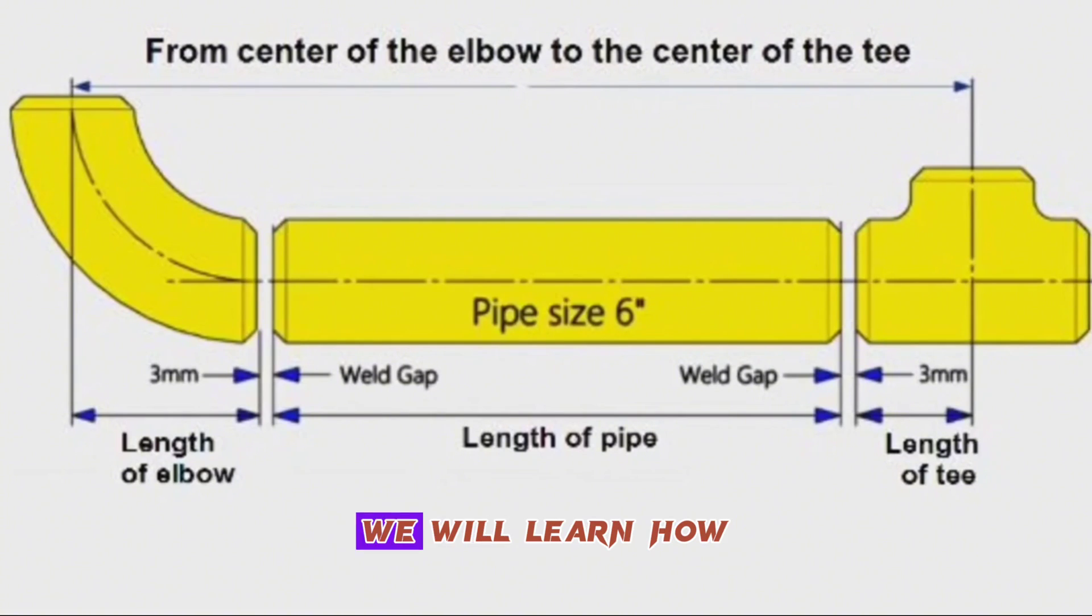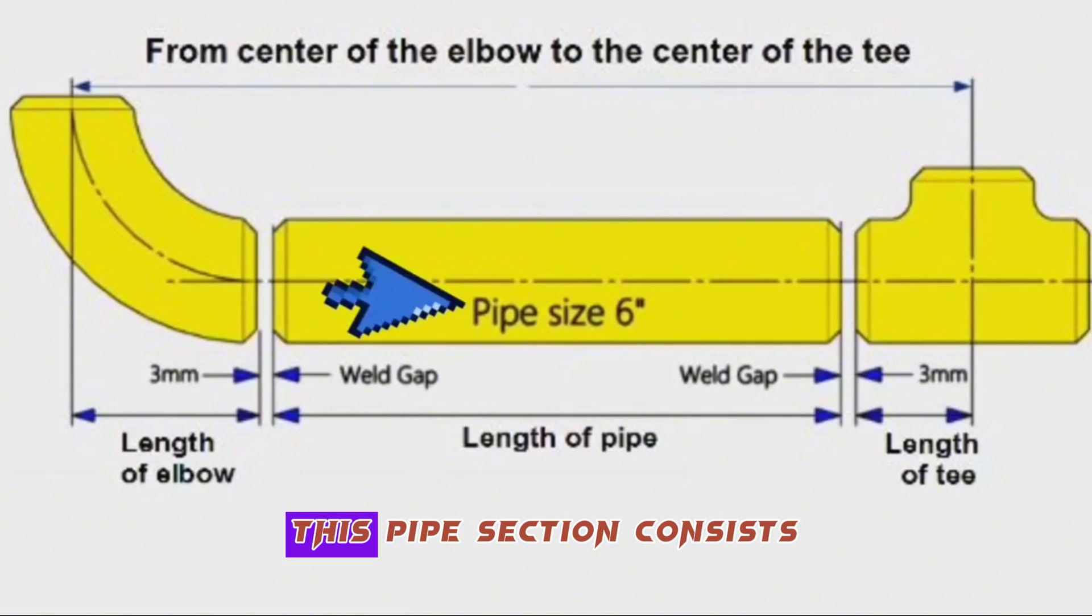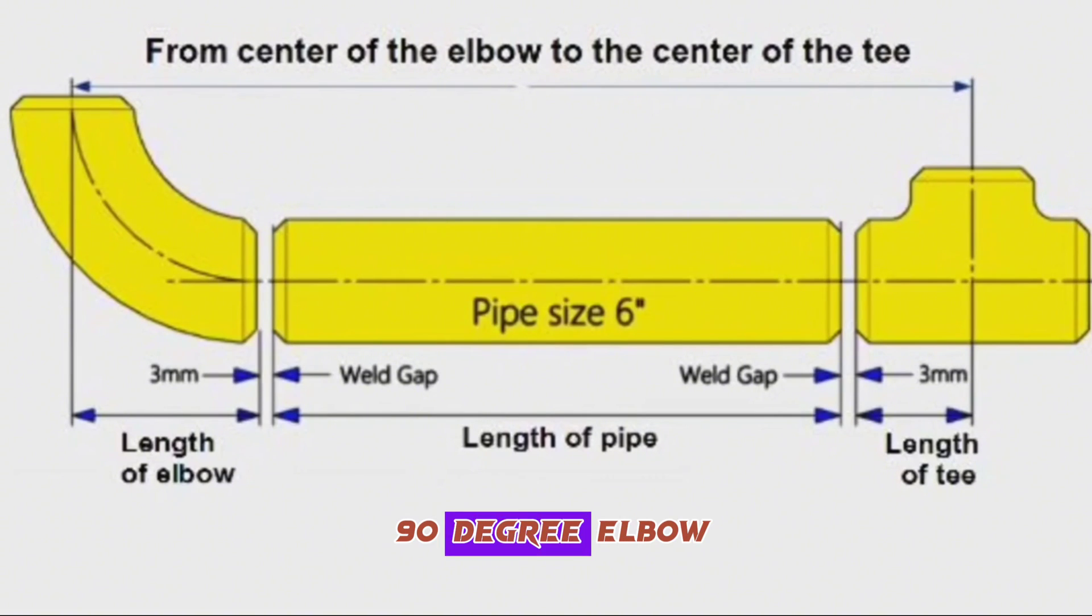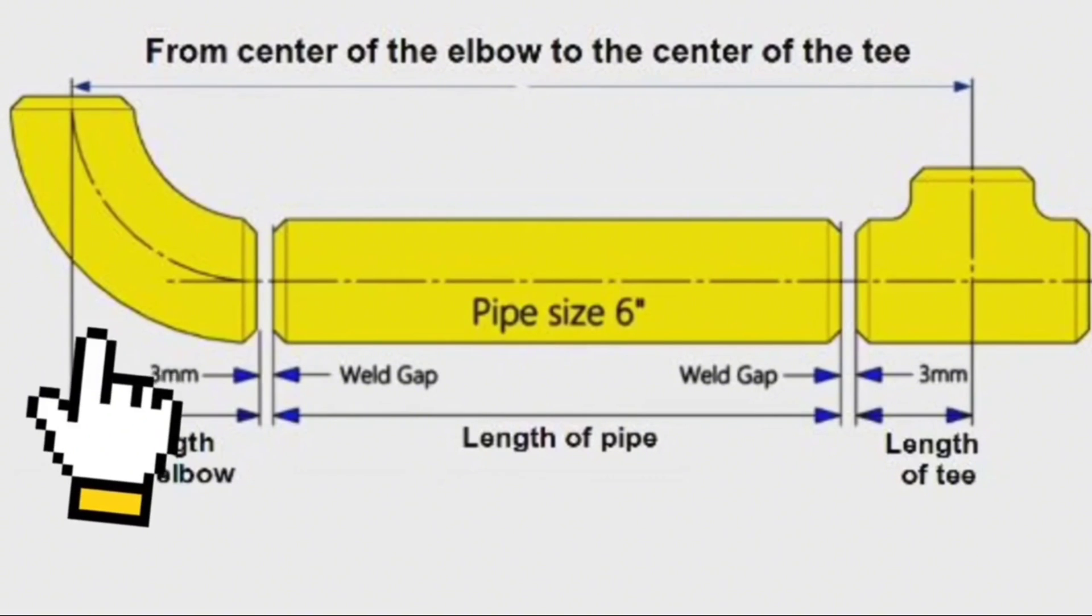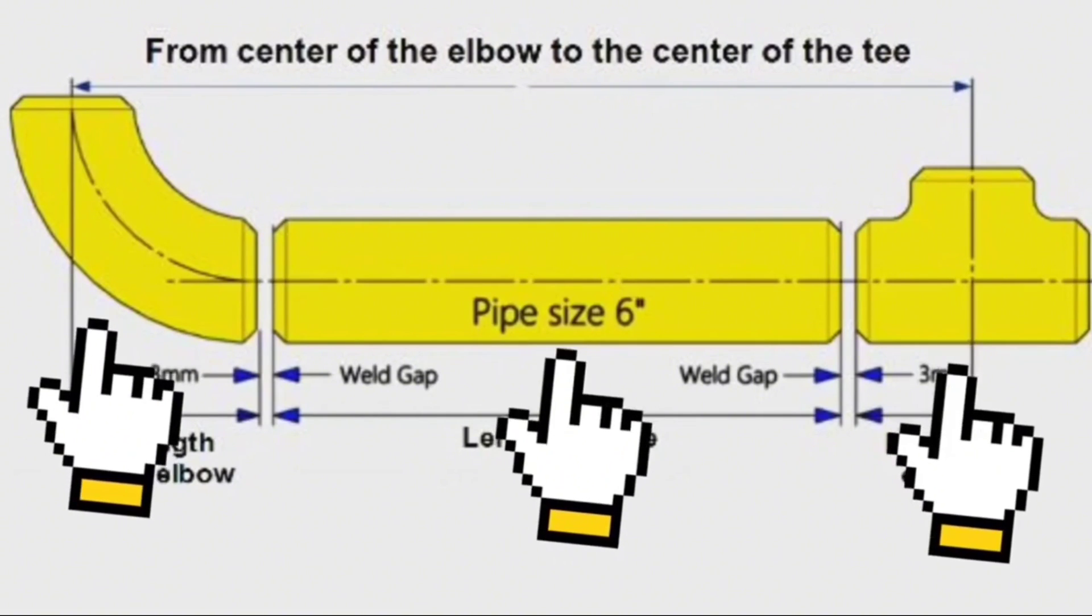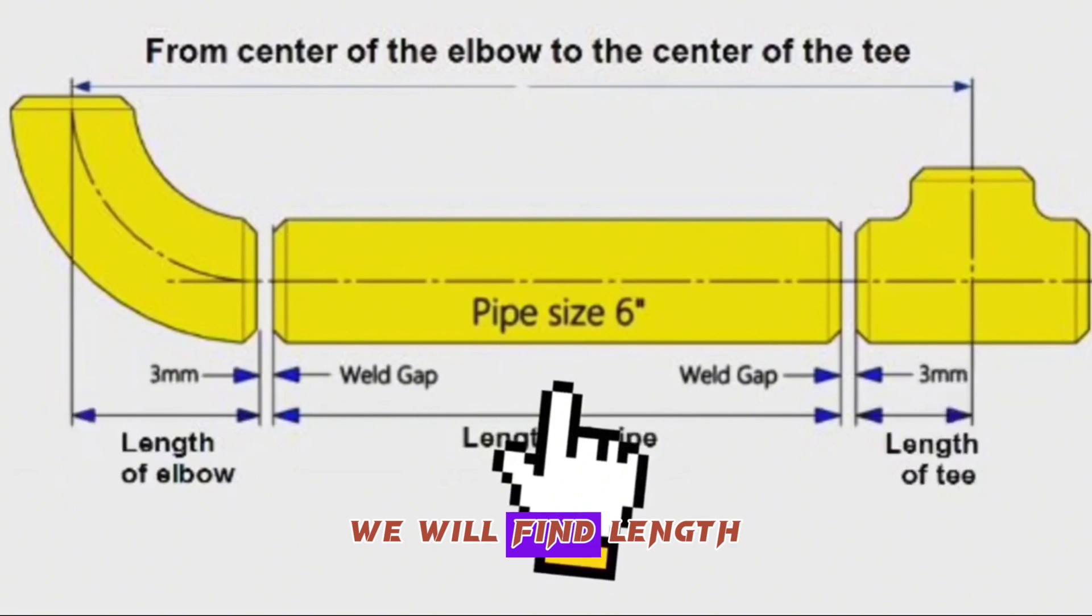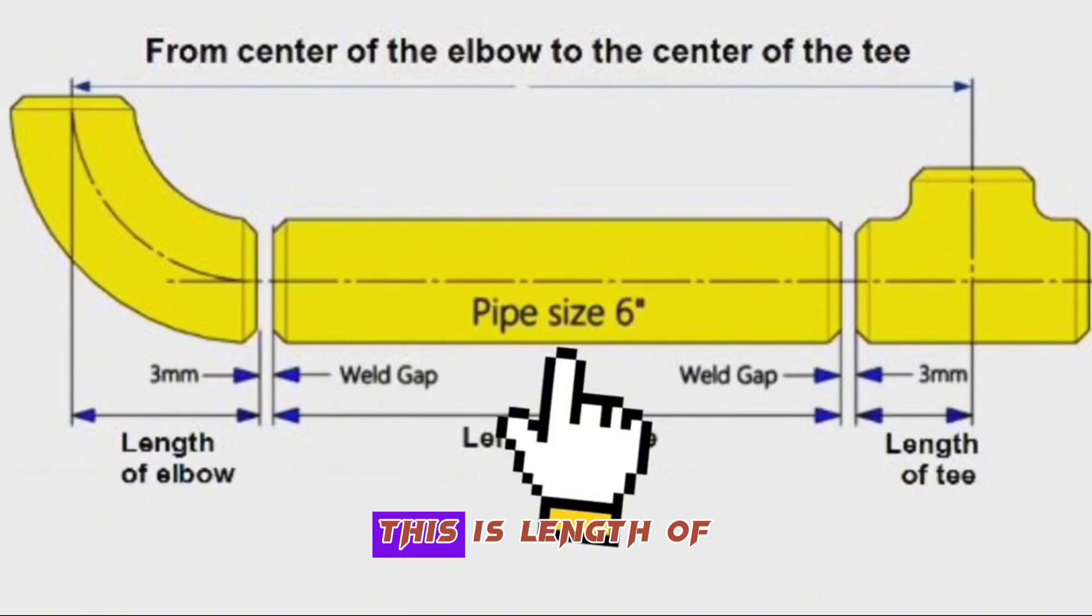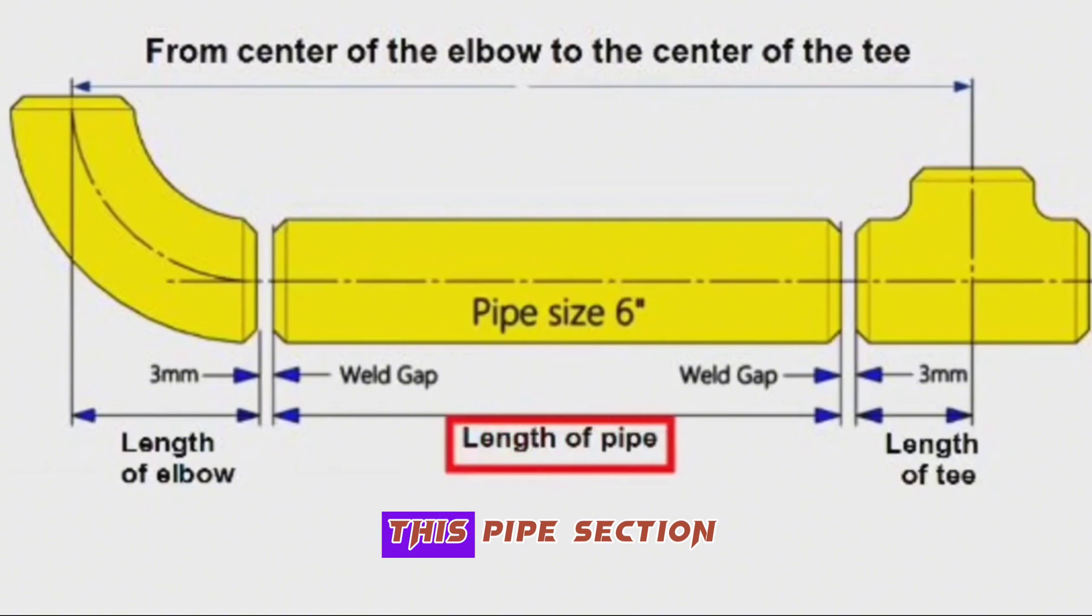In this drawing you see, we will learn how to calculate the length of pipe piece in this pipeline section. This is the 6-inch pipe section. This pipe section consists of a 90-degree elbow, pipe piece, and equal T. We will find length of pipe. This is length of pipe which is used in this pipe section.